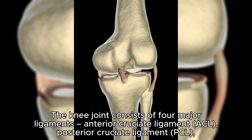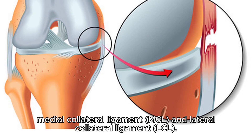The knee joint consists of four major ligaments: anterior cruciate ligament ACL, posterior cruciate ligament PCL, medial collateral ligament MCL, and lateral collateral ligament LCL.